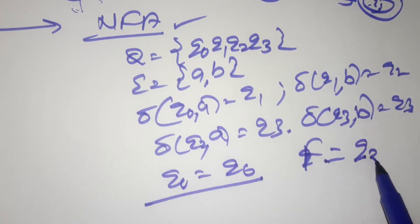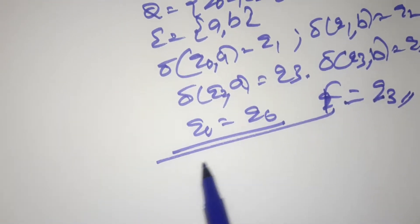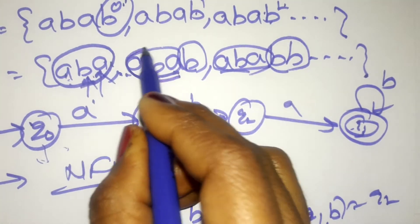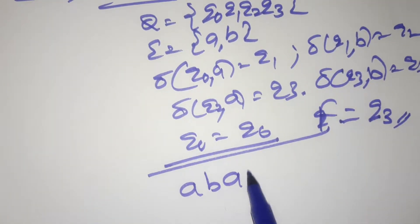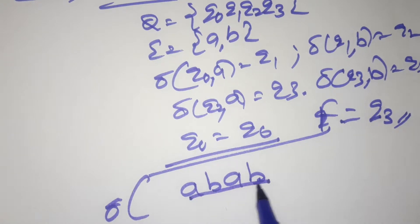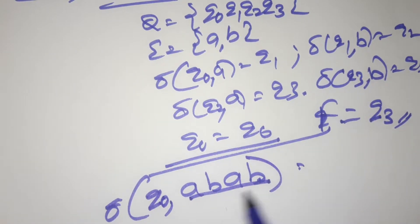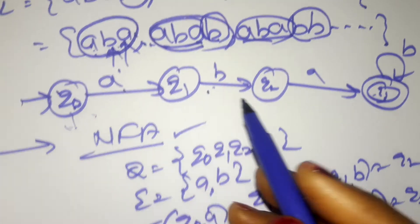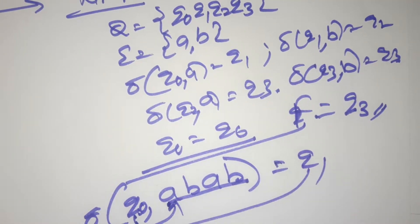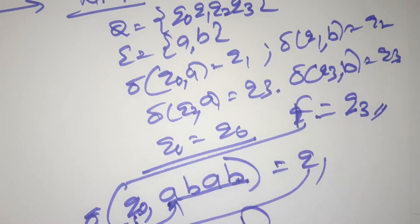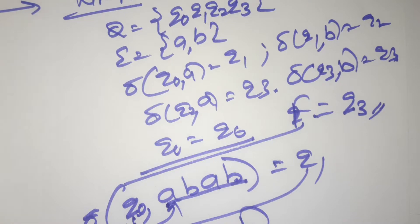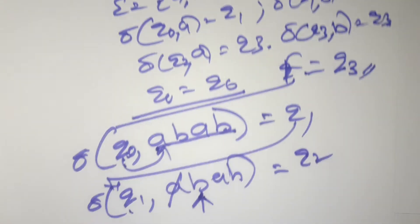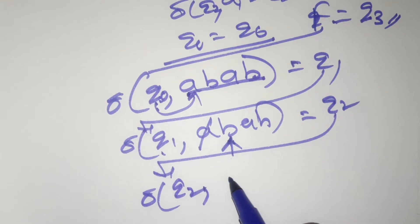This is a simple example. Let's take the input string 'abab' and verify it is accepted by the NFA. Reading always starts from the initial state. delta(q0, a) = q1. Now the present state is q1; delta(q1, b) = q2.